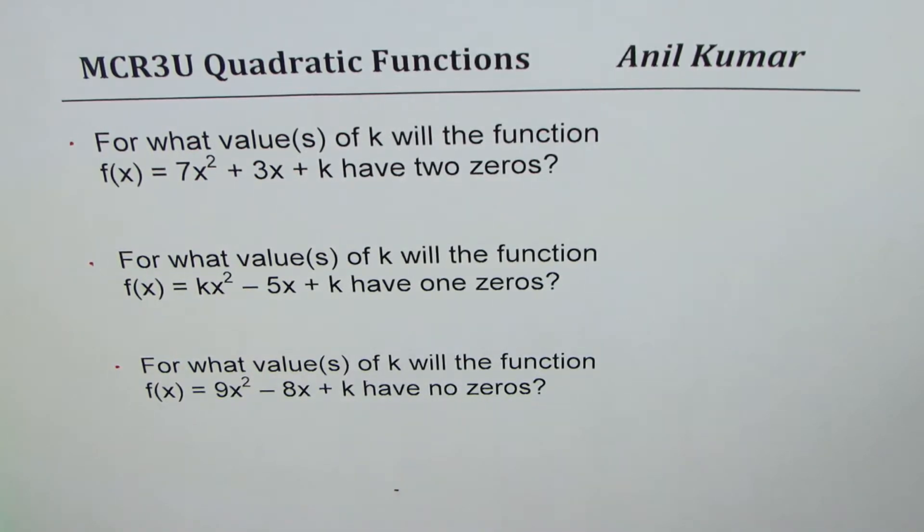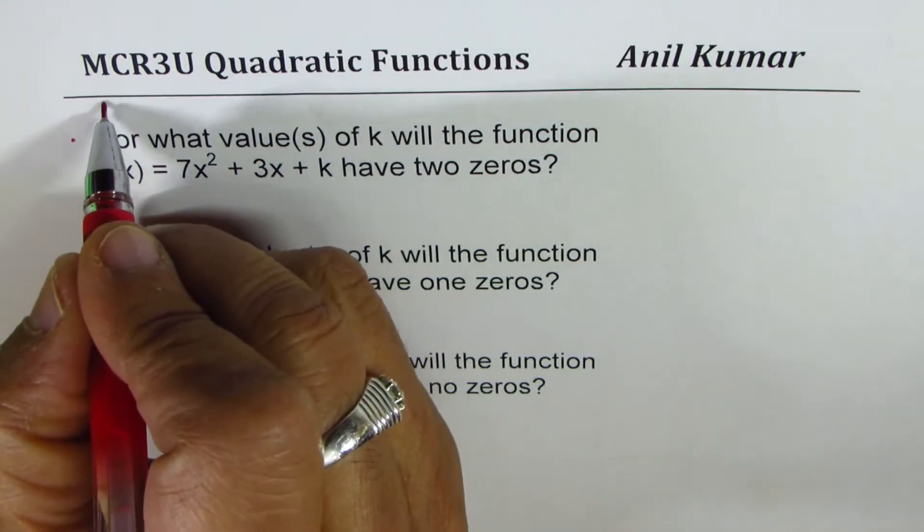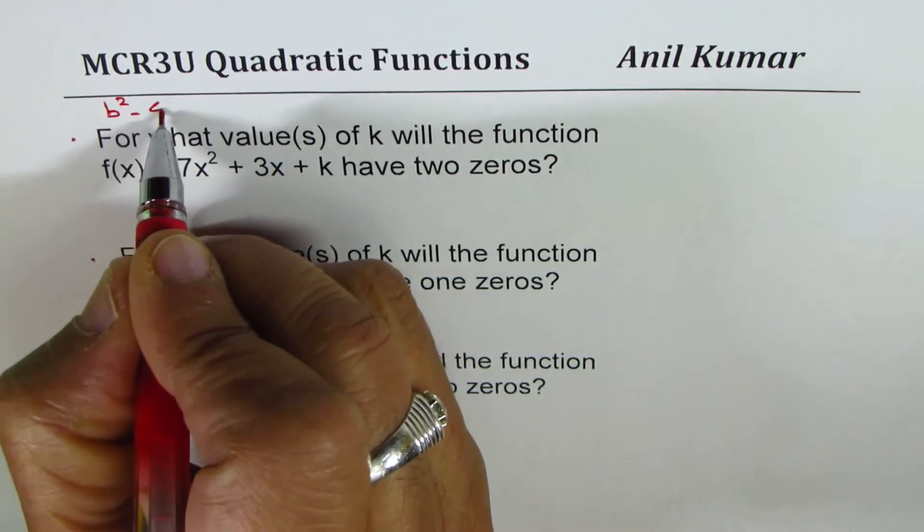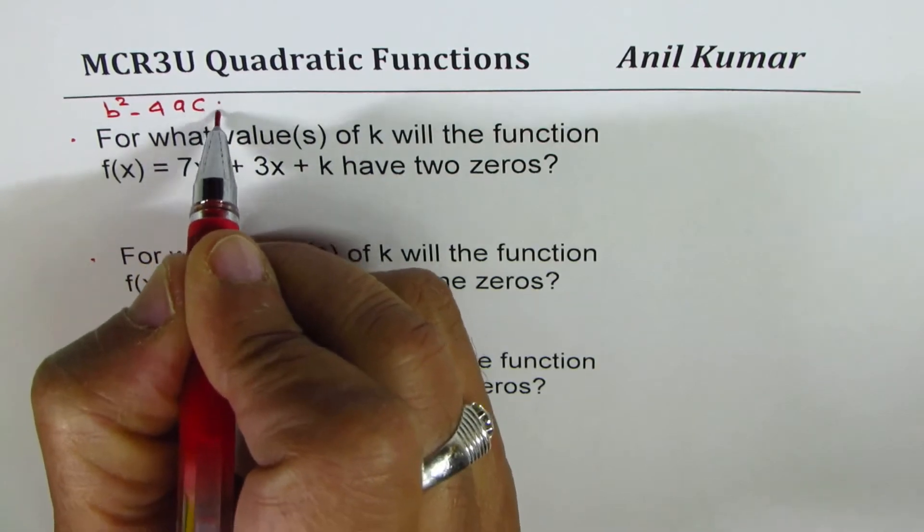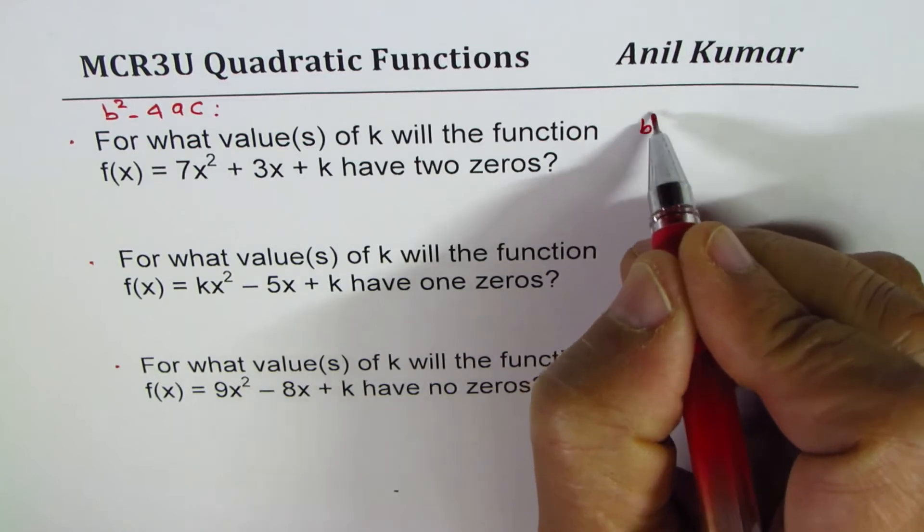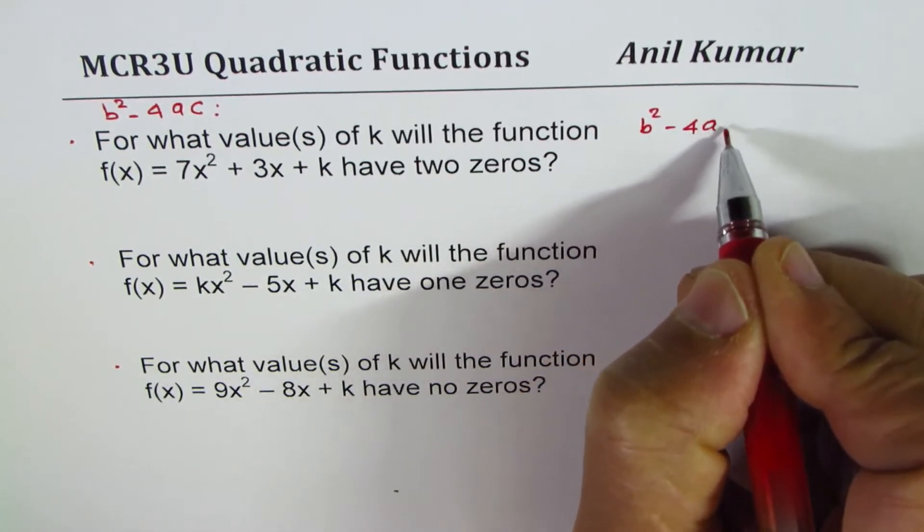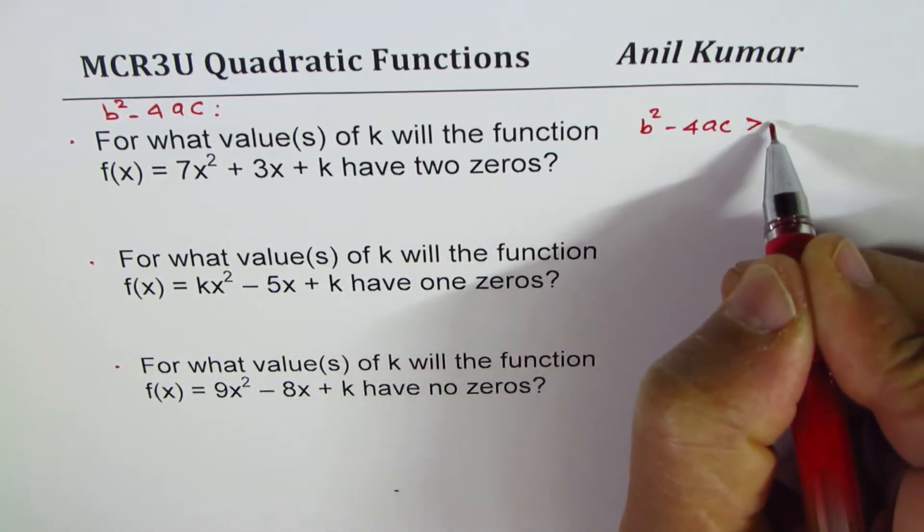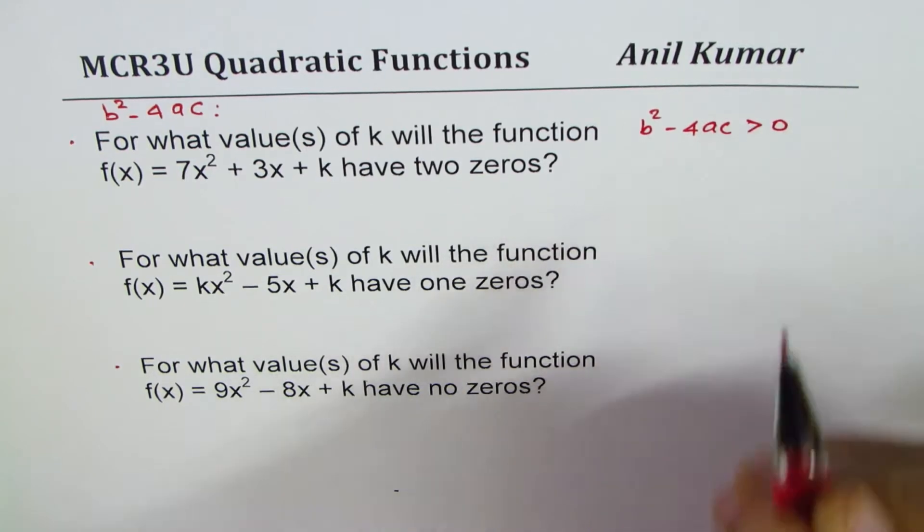The strategy as you know is to analyze the discriminant which is b² - 4ac. Now for two zeros we know b² - 4ac should be greater than zero, so we have two real roots.